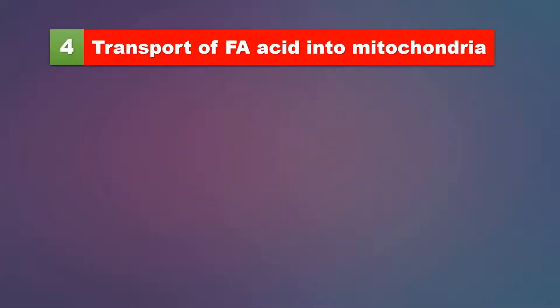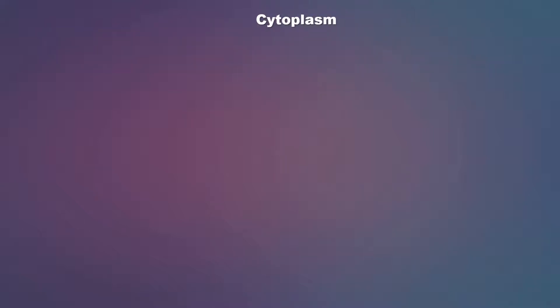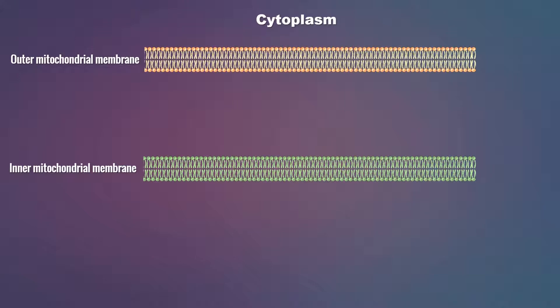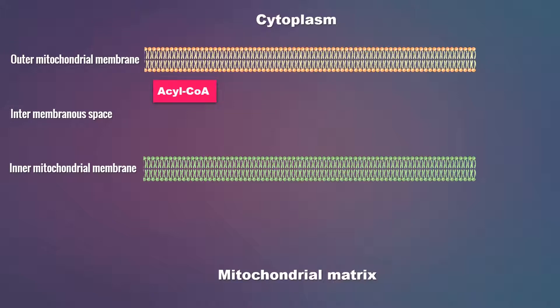Today we are going to talk about transport of activated fatty acid, that is acyl-CoA, into the mitochondrial matrix. Imagine this is the cytosol or cytoplasm, this is the outer mitochondrial membrane, and this is the inner mitochondrial membrane. In between the two mitochondrial membranes is the intermembranous space, and below is the mitochondrial matrix where beta oxidation takes place. The activated fatty acid, acyl-CoA, from the cytoplasm can easily travel across the outer mitochondrial membrane, so now we have acyl-CoA in the intermembranous space.